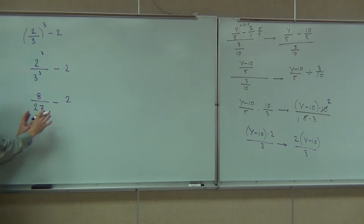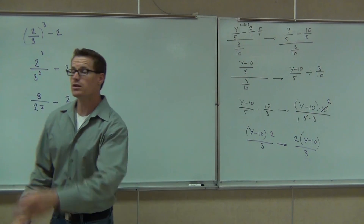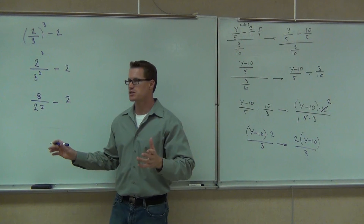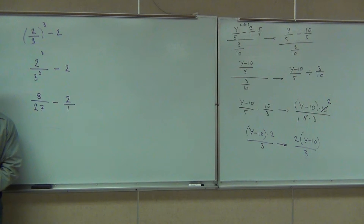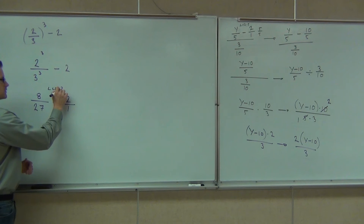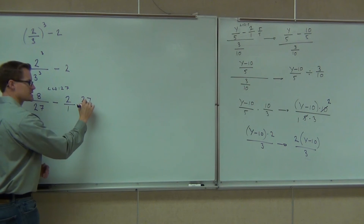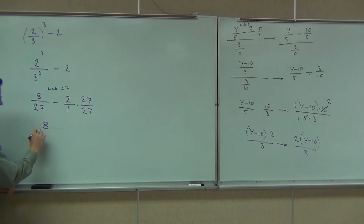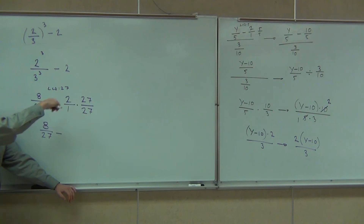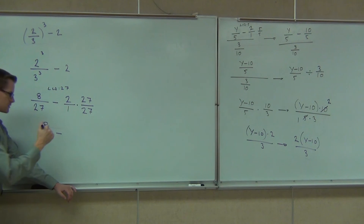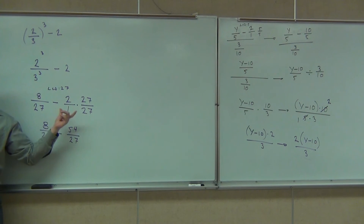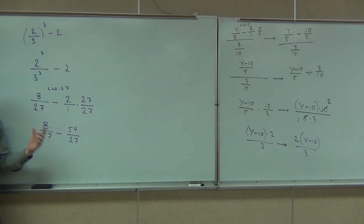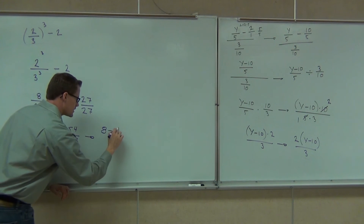So now we've got this down to 8 over 27 minus 2. Put 2 over 1. Now we don't have any multiplication or division, but we do have subtraction. We make 2 into 2 over 1. Do we have an LCD? Twenty-seven. That means we need to multiply this fraction by 27 over 27. We'll get 8 over 27 minus — what does that fraction become? 27 times 2 is 54. So it's 8 over 27 minus 54 over 27.